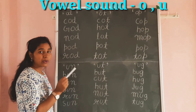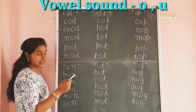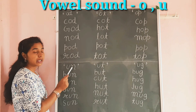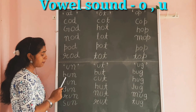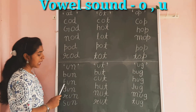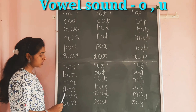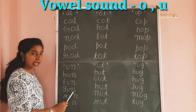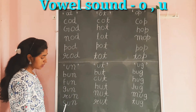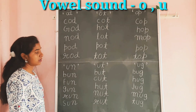Now we learn the sound of U with different words. We make words with the help of U-N: B-U-N, Bun. F-U-N, Fun. G-U-N, Gun. R-U-N, Run. S-U-N, Sun.